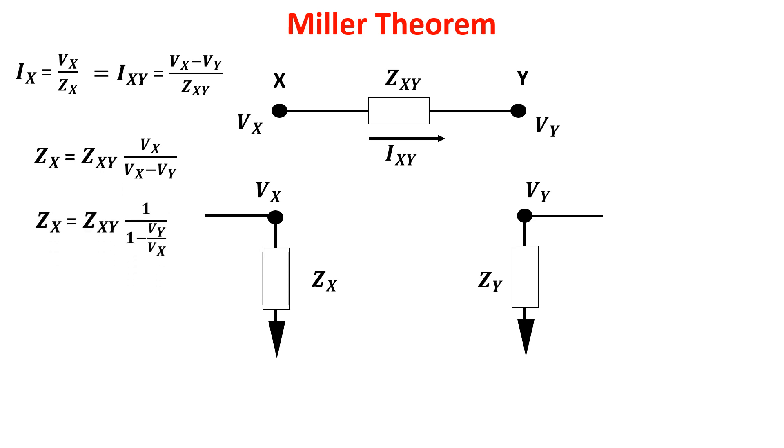Now noticing that the ratio Vy divided by Vx is the gain of the stage, we can write this final equation, and doing the same for point Y we get this other equation.